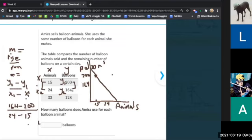So how many balloons does she use for each one? She uses four balloons for each animal because it tells us the slope. That means the amount of balloons she uses per animal, and that's why we have a graph to describe that.